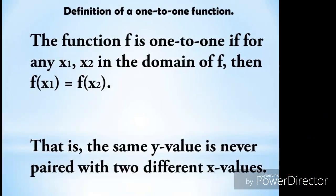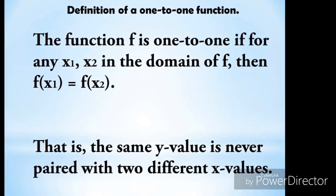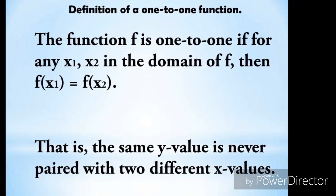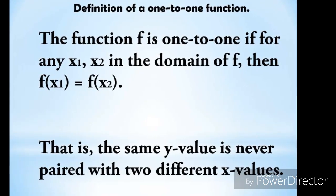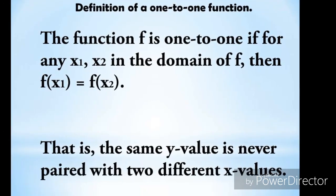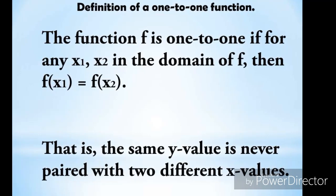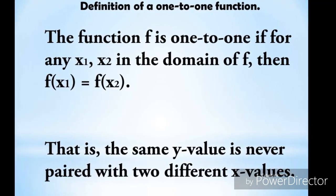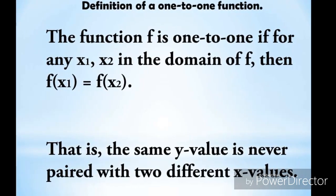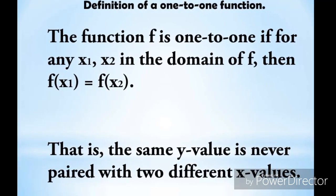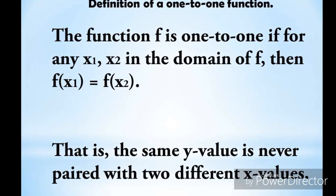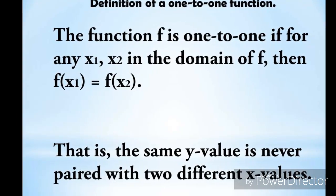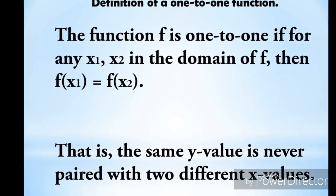Let's begin first with the definition of a one-to-one function. The function f is one-to-one if for any x₁, x₂ in the domain of f, then f(x₁) equals f(x₂). That is, the same y value is never paired with two different x values.